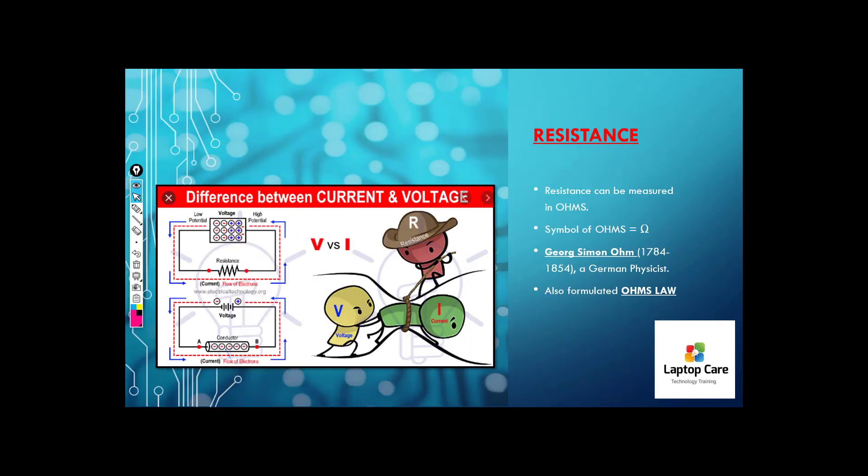We have seen that resistance is measured in Ohm. And its symbol here. George Simon Ohm was a scientist who found out in his career and he has also given a formula. So we call it Ohm's Law, which means V is equal to I R, which we have seen before.